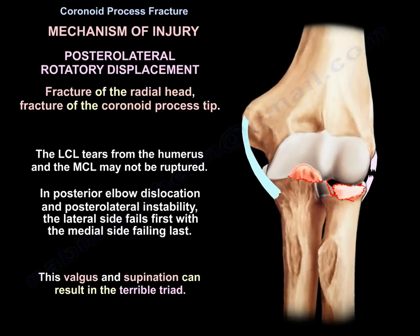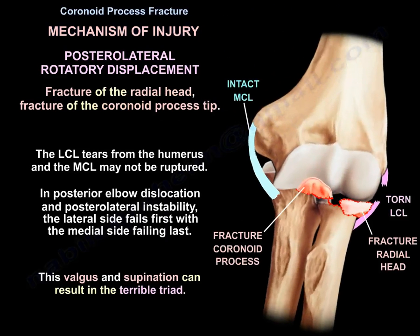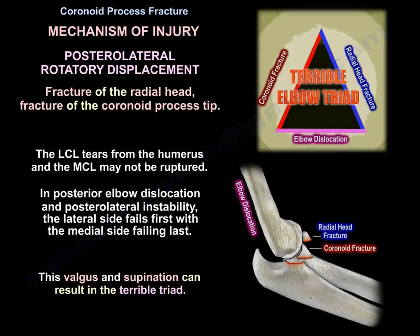The LCL tears from the humerus; the MCL may not be ruptured. In posterior elbow dislocation and posterolateral instability, the lateral side fails first, followed by the medial side failing last. This valgus and supination can result in the terrible triad: fracture of the radial head, fracture of the coronoid tip, and dislocation of the elbow.